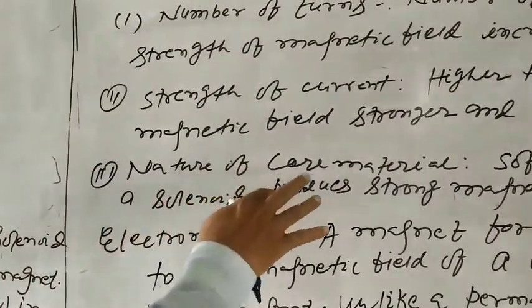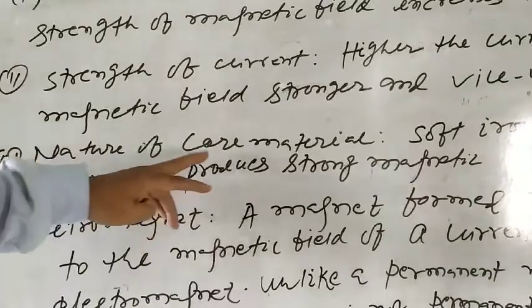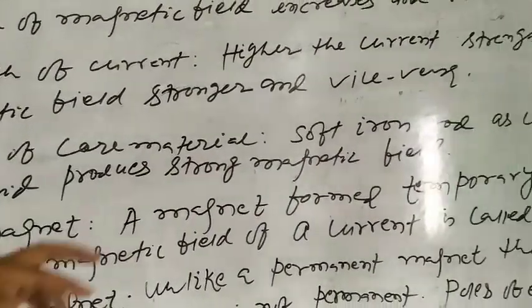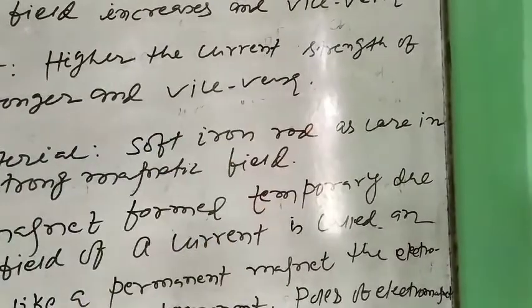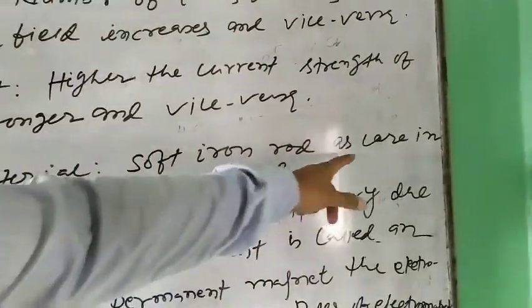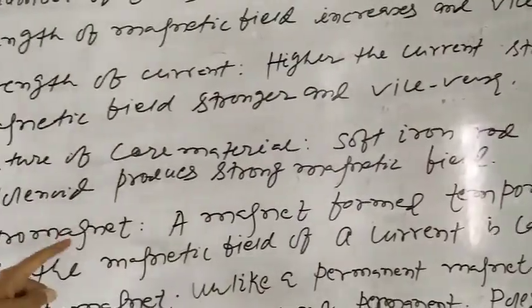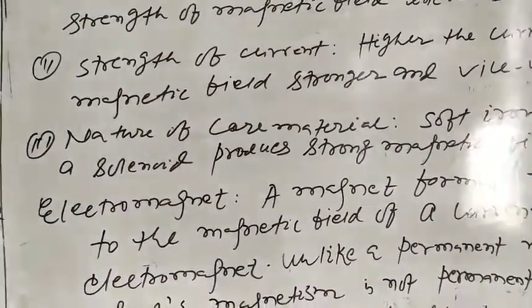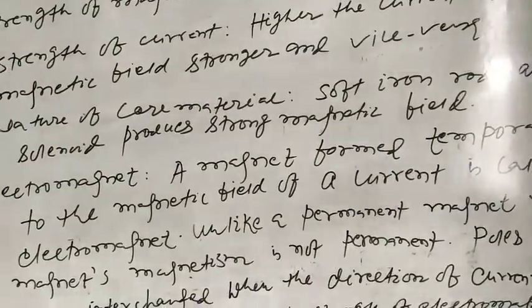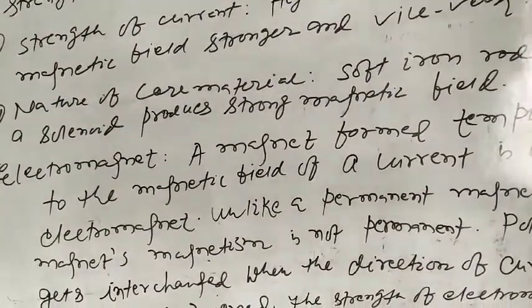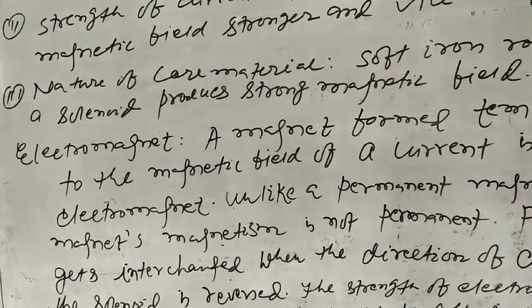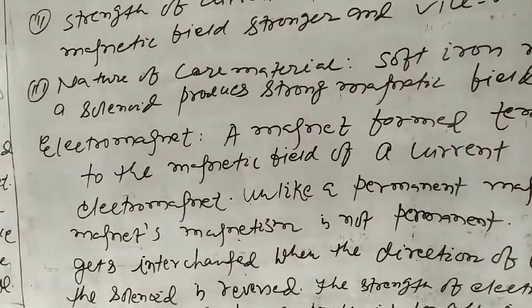Third is the nature of the core material. A soft iron rod used as a core inside the solenoid produces a strong magnetic field.